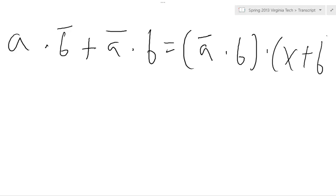So I've got a times b-not plus a-not times b. I'm going to set this equal to a-not times b times x plus b-not. But here's the tricky thing, I'm going to negate this whole statement. So let me show you guys how we can prove that this is equal to that. So I'm going to start with the right side, which is okay because the left side is pretty simplified.